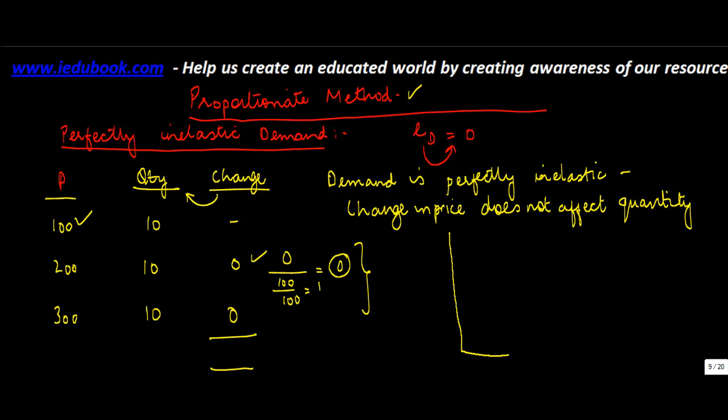Now if you draw this on a graph, 0 as the x-axis and y-axis. Let's say the x-axis refers to quantity - 5, 10, 15 - and y-axis refers to the price - 100, 200, 300, 400. Now if you plot points, when the price was 100, the quantity demanded was 10.